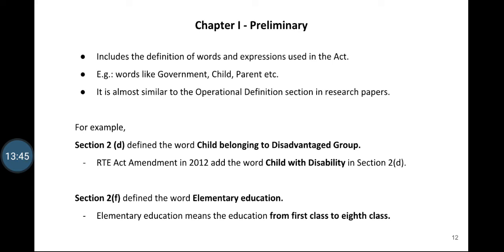This was not a sudden decision by the government. Many education commissions in the past recommended this change, giving many reasons including the psychological development of children. But this definition in the RTE Act posed a real problem for states because some upper primary schools only had teachers and resources to handle up to 7th class. As per this Act they have to start 8th class also. Similarly at the high school level they would have to close down the 8th class, which may affect the jobs of many teachers. As per my knowledge, the government gave some time gap for states to implement this change.